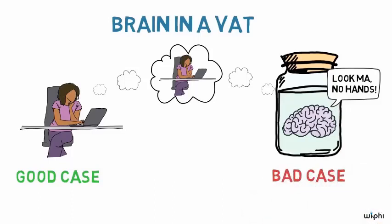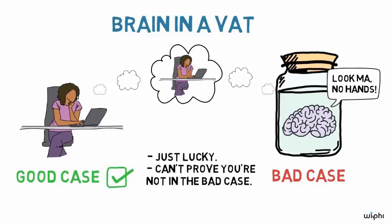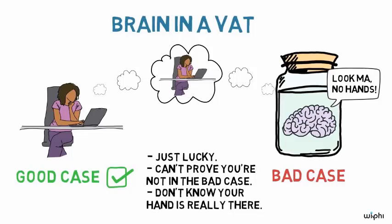So even if you are in the good case and your experience really is coming from looking at your hand, you're just lucky that you're not in the bad case. You can't prove that you aren't and your inability to rule out the bad case means that you don't actually know that your hand is really there in front of you.